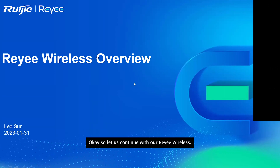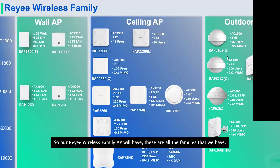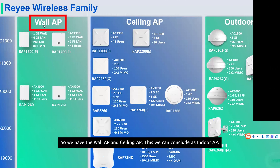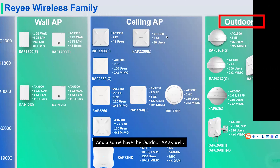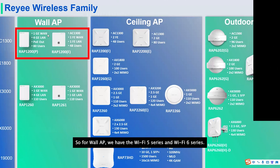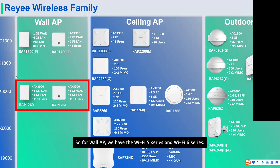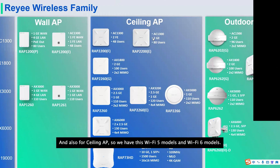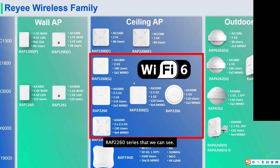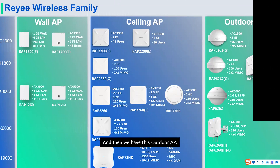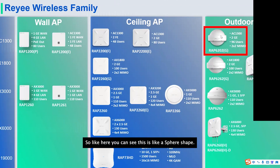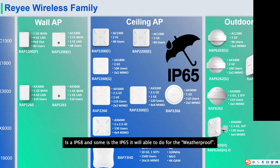Now let's continue with Reyee wireless. The Reyee wireless family includes wall APs, ceiling APs — both are indoor APs — and outdoor APs. For wall APs we have Wi-Fi 5 and Wi-Fi 6 series. For ceiling APs we have models like the 555, 556, and 2260 series. For outdoor APs you can see sphere-shaped and other designs with IP65/IP66/IP68 ratings for weatherproofing.